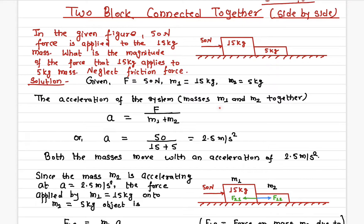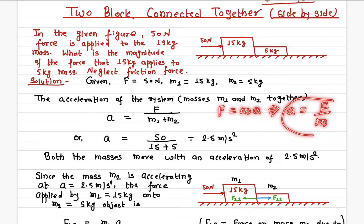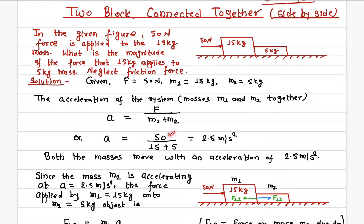By Newton's second law of motion, force equals mass times acceleration, so acceleration equals force divided by mass. The force is 50 newtons and the total mass is 15 plus 5 kilograms. Simplifying, we get an acceleration of 2.5 meters per second squared. This acceleration is the same for both masses.